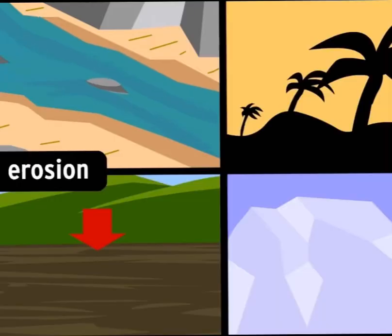And erosion is something that causes rocks to move and disintegrate by the action of water, wind, gravity, and ice.